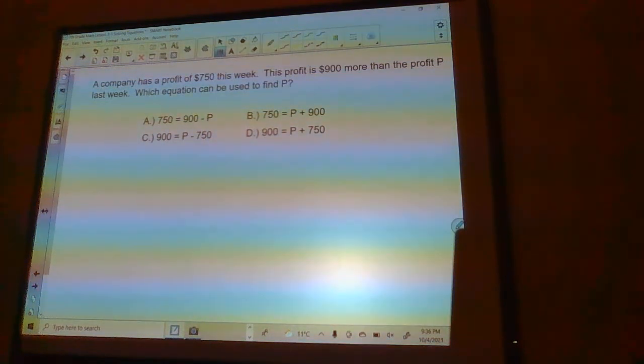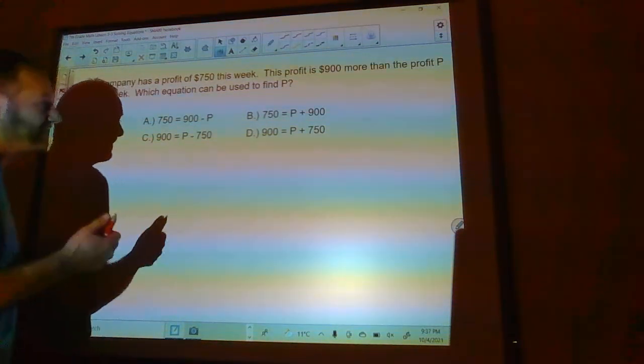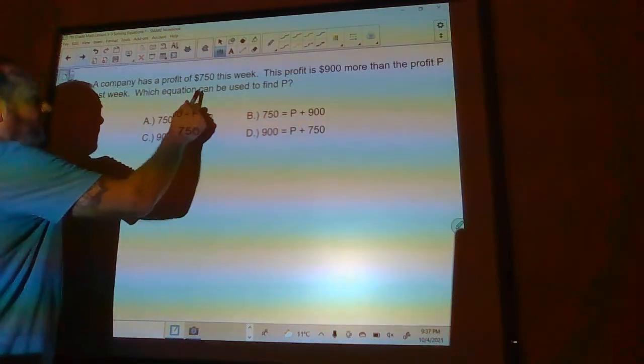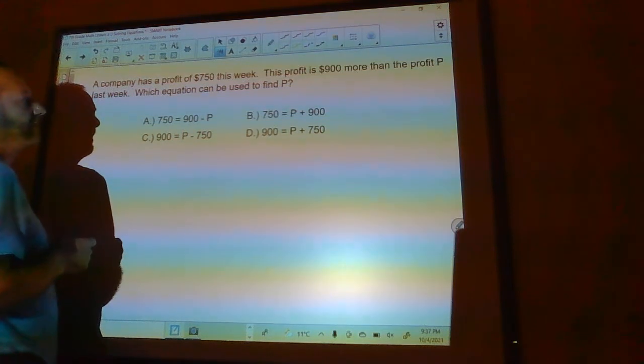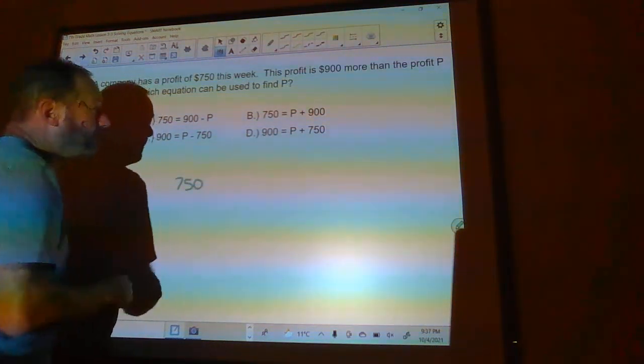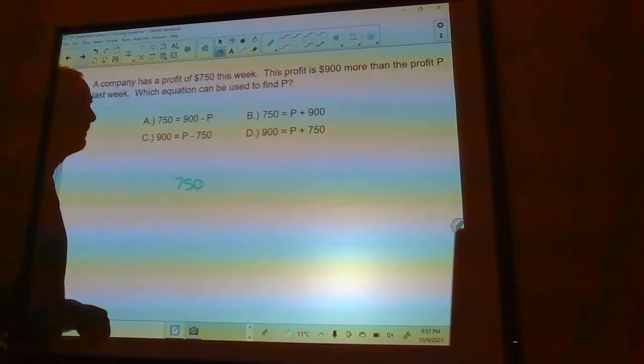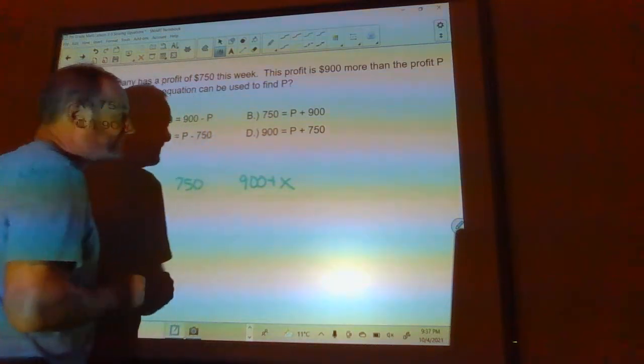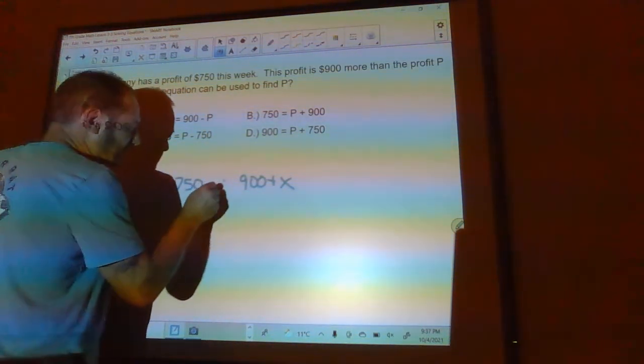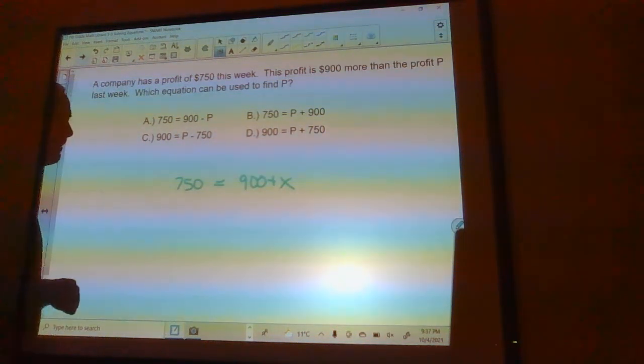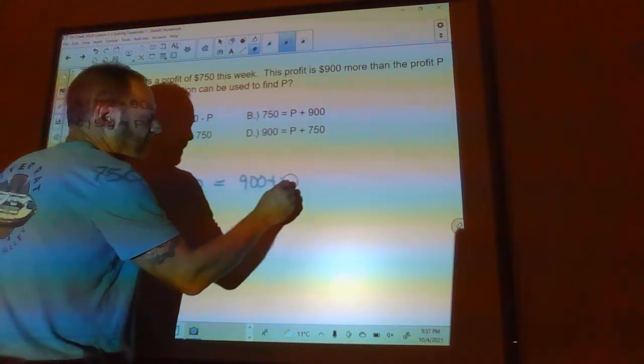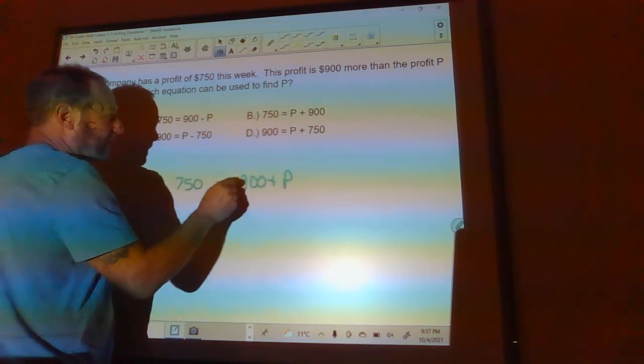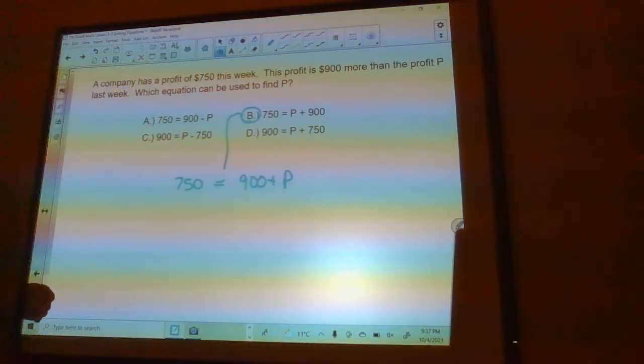A company has a profit of $750 this week. This profit is $900 more than the profit p last week. Which equation can be used to find p? You can go through each one of these. I think the easiest way to solve this is to just build the equation. This company had a profit of $750 this week. So $750. That is the same. That is $900 more than the profit from last week. So we don't know what the profit was last week, but we do know that it was $900 more. And we know that these two things are equal. So which equation is that? Actually, instead of x, we can use p for profit. And then look at that. That's this right here. B. 750 equals 900 plus p.